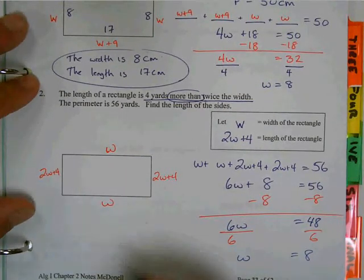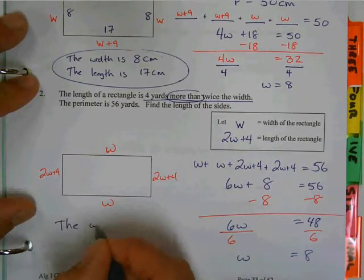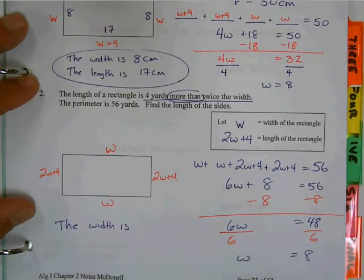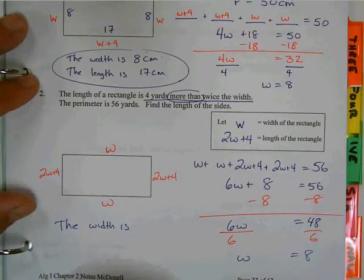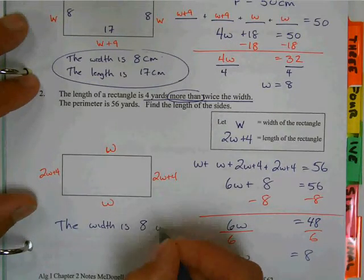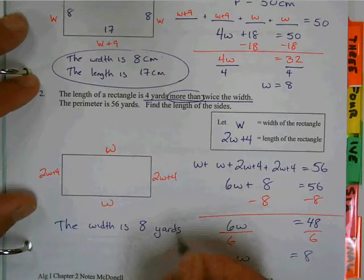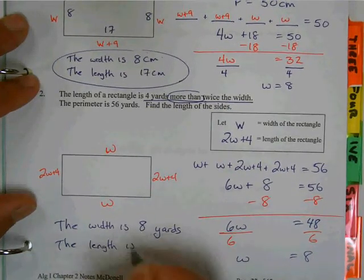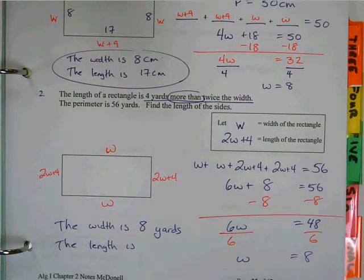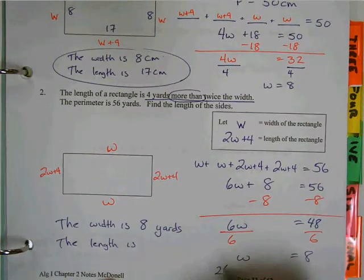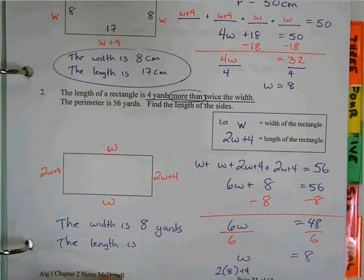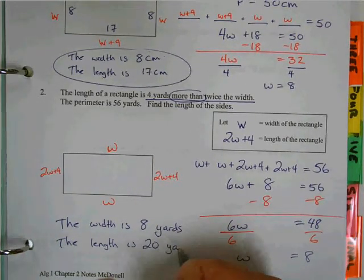I can say the width is, what units of measure am I using? 8 yards. But what else do I need? The length is, how do I find the length? 2 times 8, so let's just do a little of the work here. 2 times 8 plus 4. Help me out, somebody. 20. So the length is 20 yards. There I've answered my question.